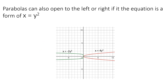Parabolas also open left to right. For example, y equals negative 2y to the 6th — again an even exponent — gives the same parabola shape. Since instead of y equals x squared it's x equals y squared, and then x equals 4y squared gives this red parabola opening to the right.